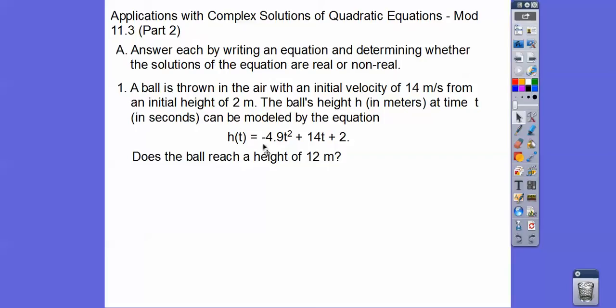And meters per second, it's always in negative 4.9. If it was in feet per second, this would be negative 16. So the ball's height, h(t) in meters at time t in seconds, can be modeled by this equation right here.